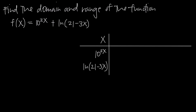In this video, we're talking about how to find the domain and range of a function. In this particular problem, we've been given the function f is equal to 10 to the 2x power plus natural log of quantity 21 minus 3x. We need to find the domain and range of this function, and this process is going to be similar but also different depending on the kind of function that you have.